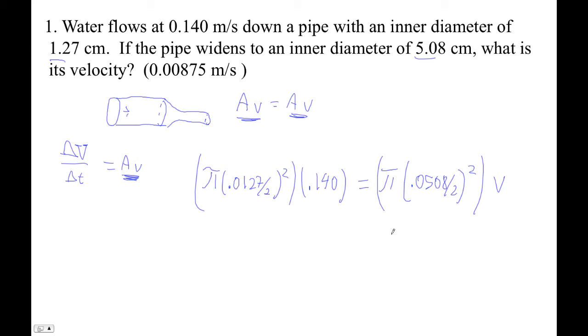Now let me give you a clue here. The hardest part of these problems is like converting the units. Pi goes away. You don't even need to use pi. Divided by 2 goes away. So really it's proportional to the diameter.